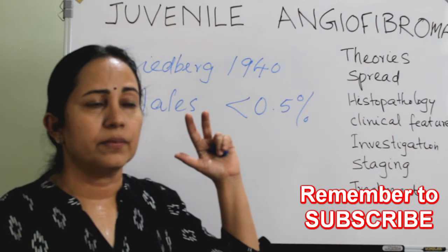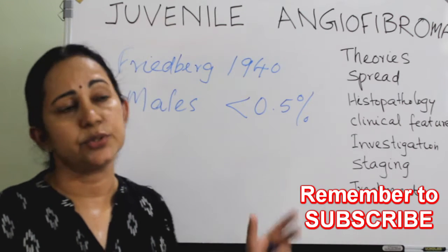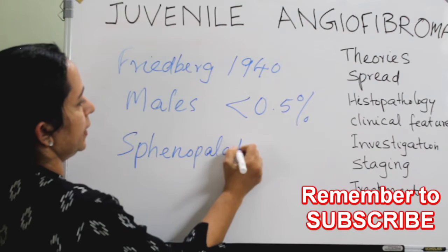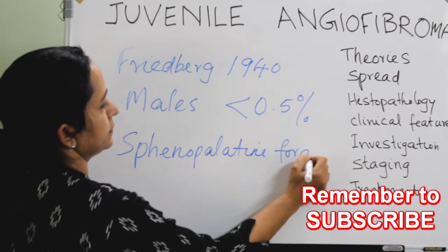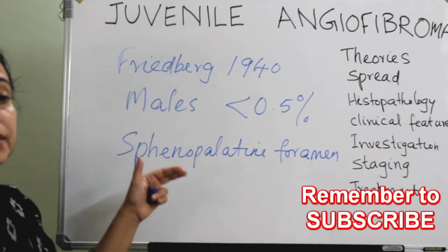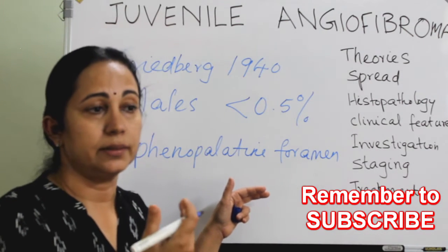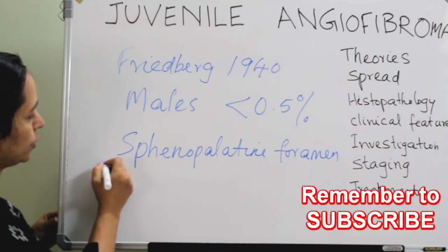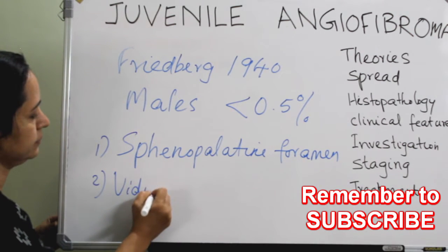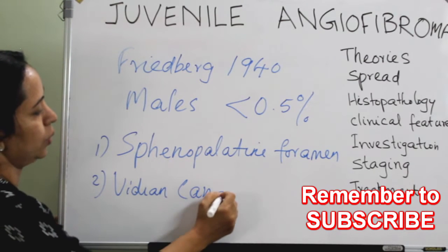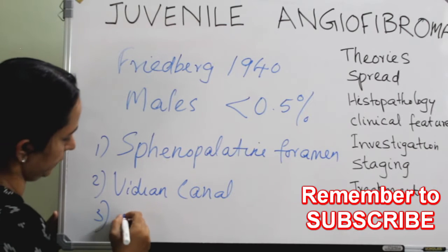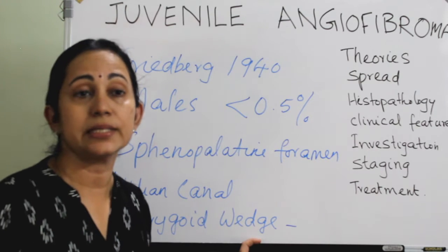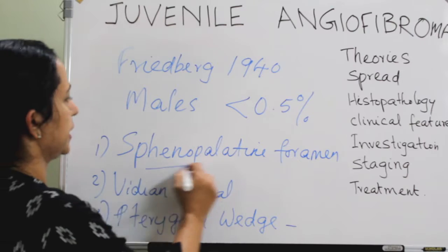The most common site of occurrence of this angiofibroma is the sphenopalatine foramen, which is located in the lateral wall of the nasal cavity, posterior to the middle turbinate. It can also arise from the pterygoid canal and from the pterygoid wedge, which is a common site of recurrence after surgery.